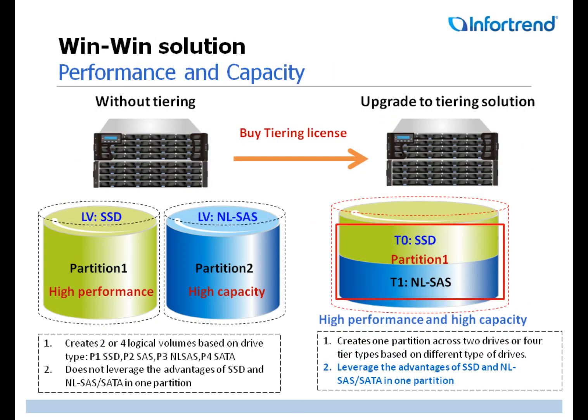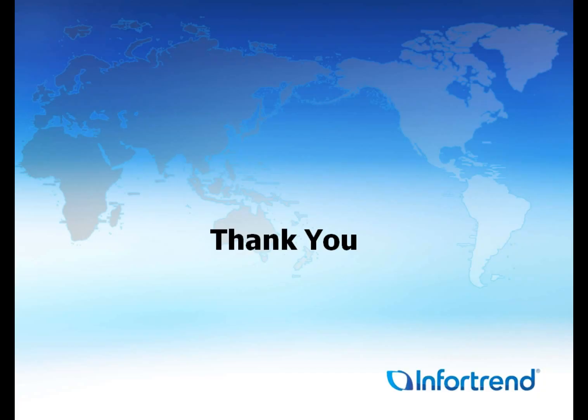In summary, automated storage tiering is a win-win solution that combines high performance and capacity while minimizing the total cost of ownership. Automated storage tiering is an optional license for InfoTrend Eon Store DS systems. If you would like to know more, please contact your vendor for details. Thank you for watching.